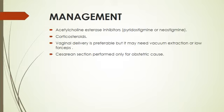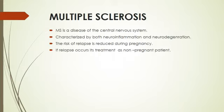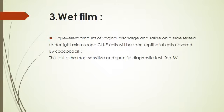Caesarean section is performed only for obstetric causes. Multiple sclerosis is a disease of the central nervous system characterized by both neuroinflammation and neurodegeneration. The risk of relapse is reduced during pregnancy. If relapse occurs, it is treated the same as in non-pregnant patients.